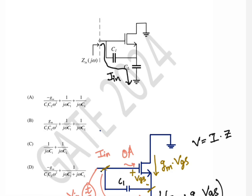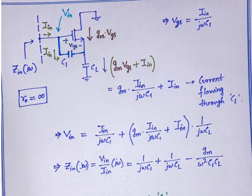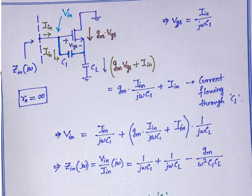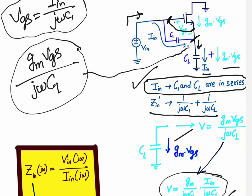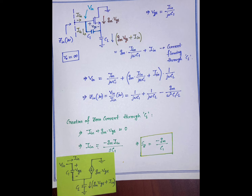Since gm·vgs is also flowing here, and we are computing impedance with respect to i_in, we get this modified impedance. We measure from the input point, so the impedance is computed with respect to i_in — that is the reason we refer everything to i_in.